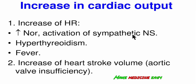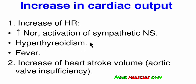In hyperthyroidism, which is an endocrine problem, we can also see the mechanism of increased cardiac output. Thyroid gland hormones can cause arterial hypertension through increased heart rate. In thyrotoxicosis, there is tachycardia, and through this mechanism we have cardiac output increase and arterial hypertension.